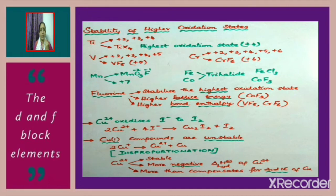Fluorine has the ability to stabilize the highest oxidation state. This is due to two reasons: higher lattice energy, as in the case of cobalt trifluoride, and higher bond enthalpy, as in the case of vanadium pentafluoride and chromium hexafluoride.